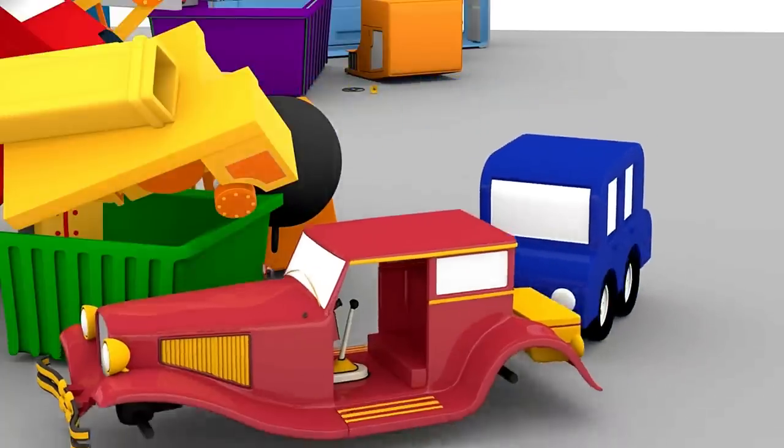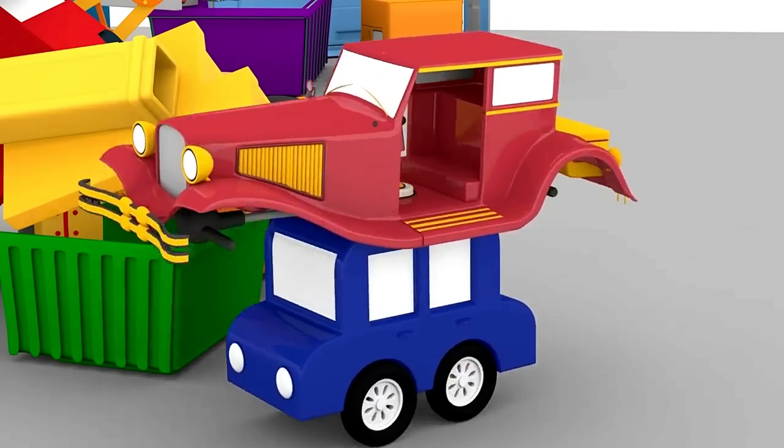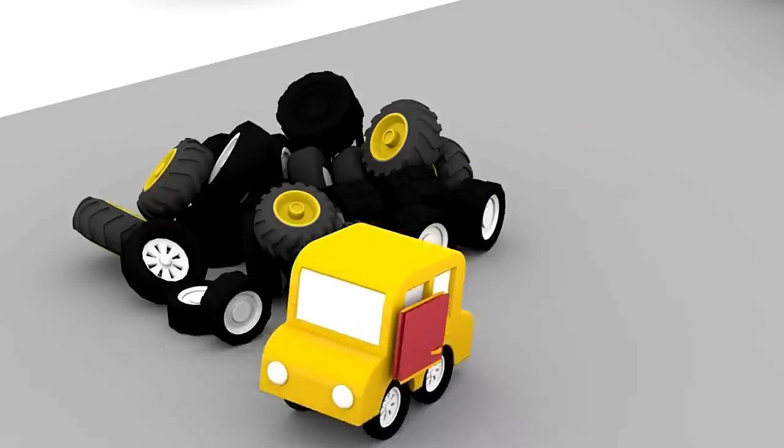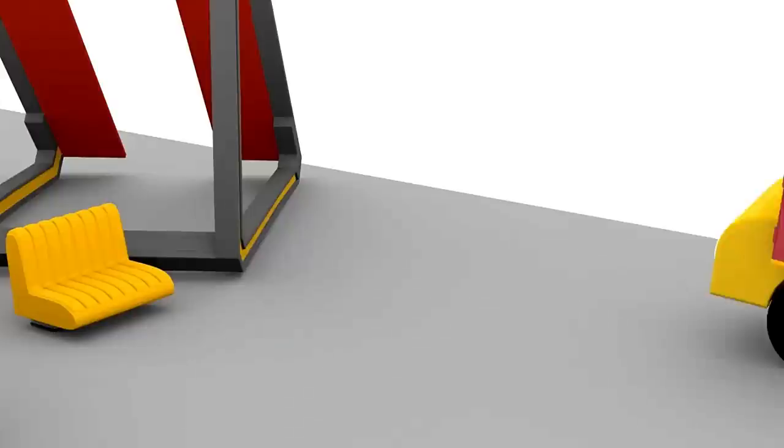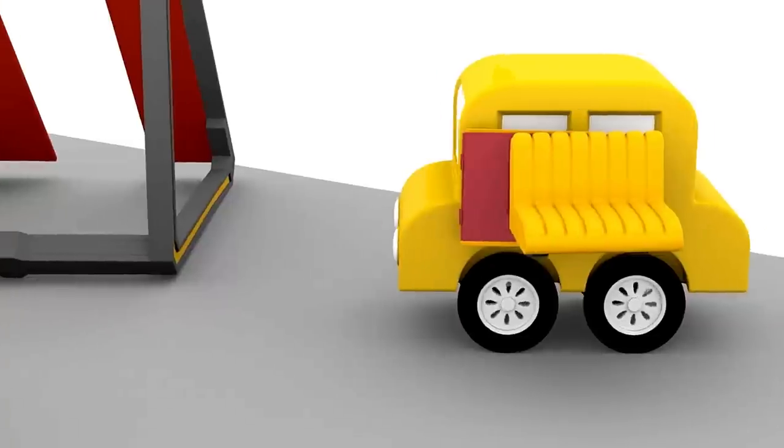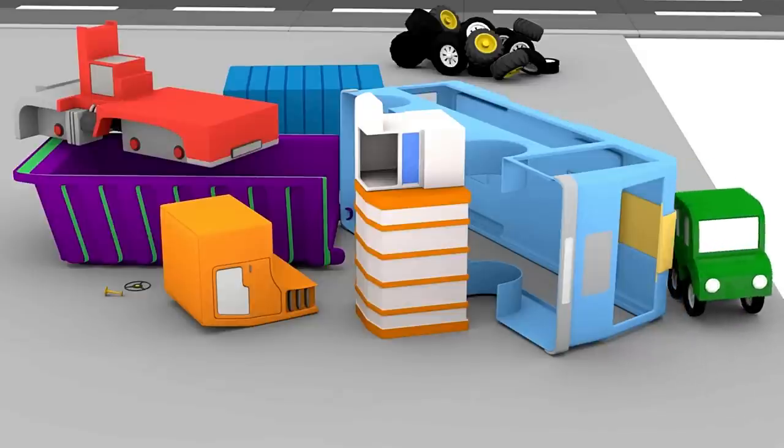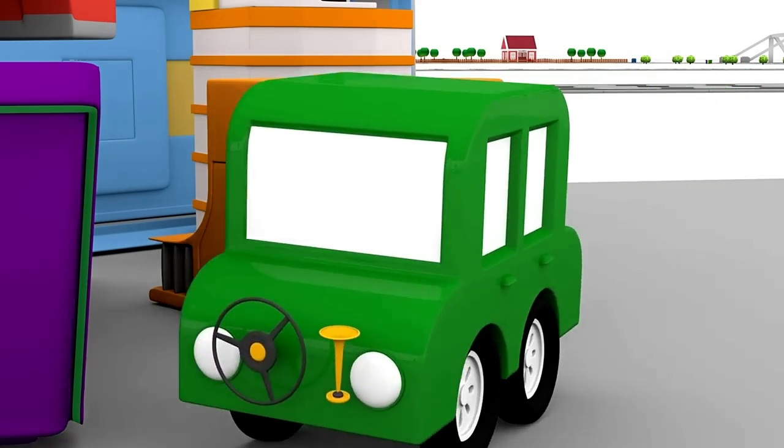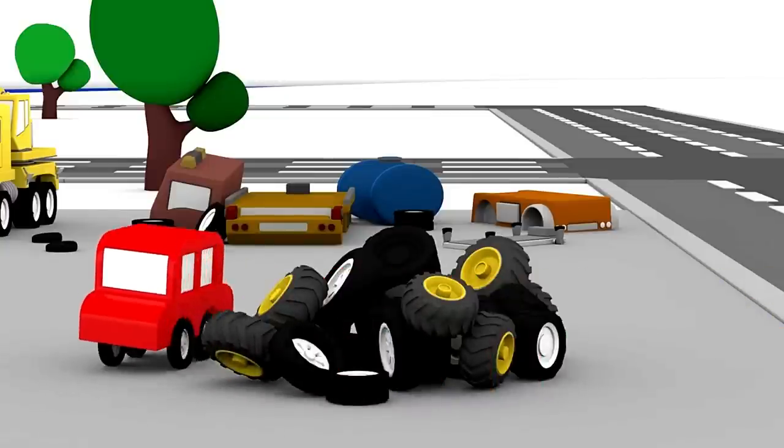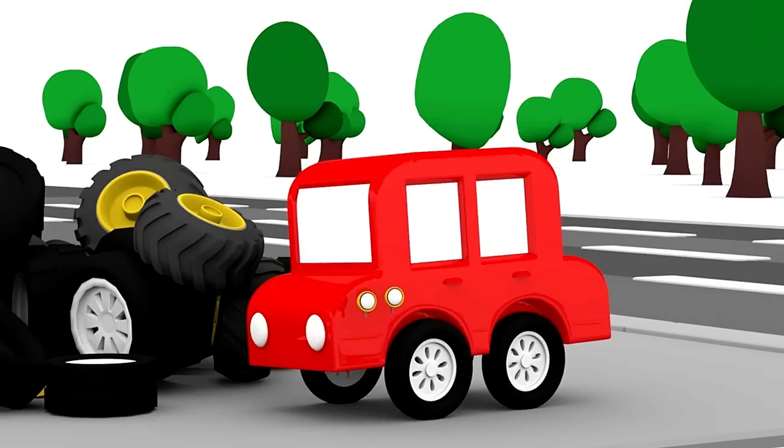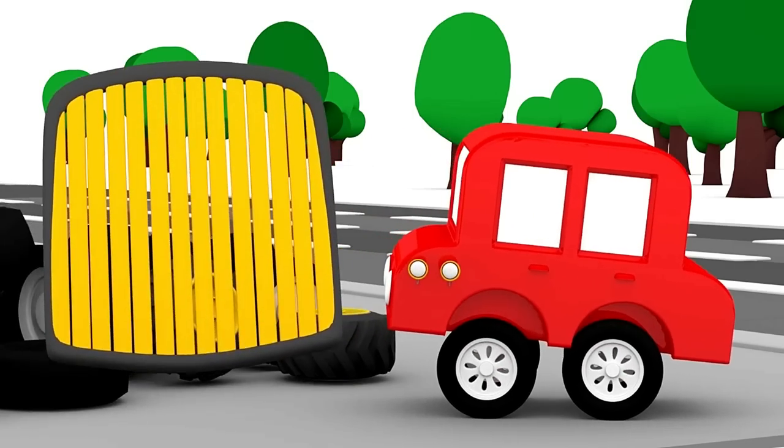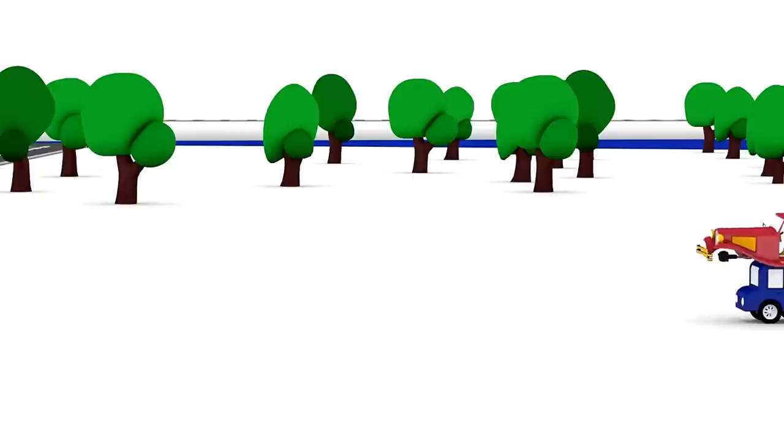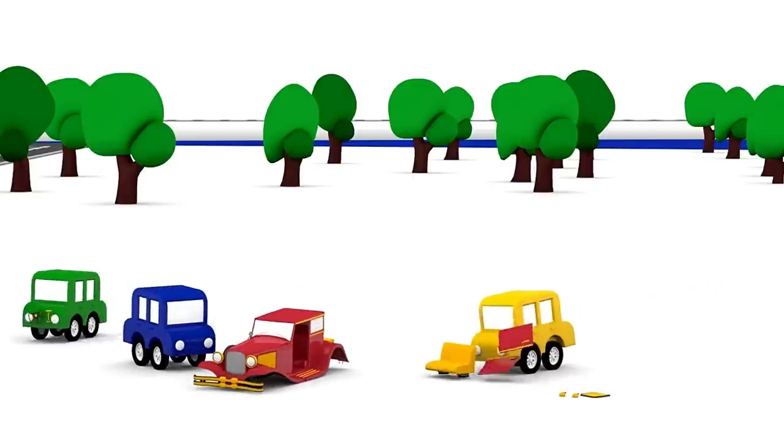Look. This is the body of a very old car. A retro car. And here are two doors for it. The green car has found a steering wheel and a car horn. The red car has found the radiator grill. Let's put everything together.